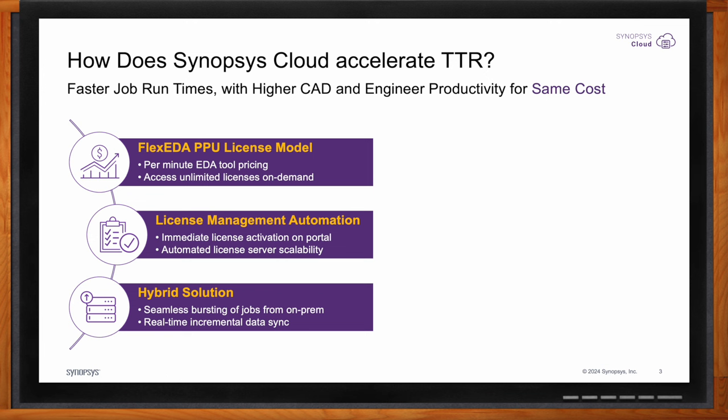Aggregated over weeks, months, or an entire chip design life cycle, you can save months of time and accelerate tape-out schedules. I've categorized these into three capabilities. Number one is our Flex EDA licensing model. It enables customers to not be limited by the number of software licenses they own or have access to, and instead just pay on a per-use, per-minute basis.